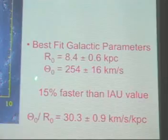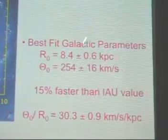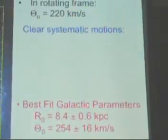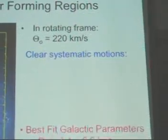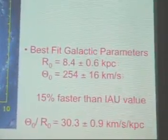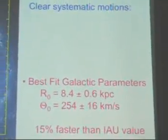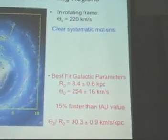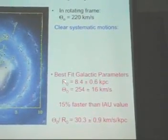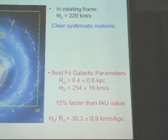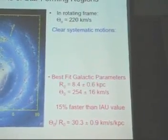Now, this number differs from the International Astronomical Union adopted value from about 20 years ago of 220 kilometers per second. And it's statistically significantly different. And basically, this is saying that the Milky Way spins about...